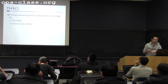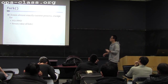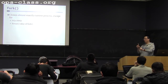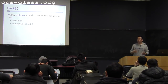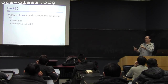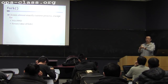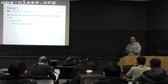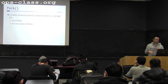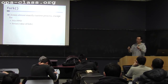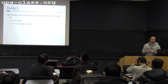Fork clones almost exactly the current process, except for two pieces of information. The first is PID and PPID: since there are now two threads, each needs its own PID. Thread B's PPID will be thread A, while thread A's PPID is whichever thread created thread A. The second difference is the return value of fork — although both threads appear to have just called fork, the parent returns the child's PID while the child returns zero. This is the semantics of fork.